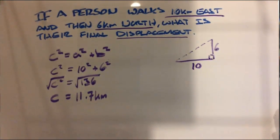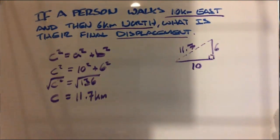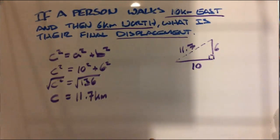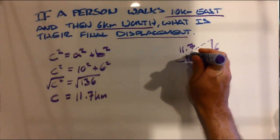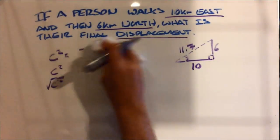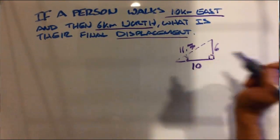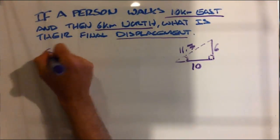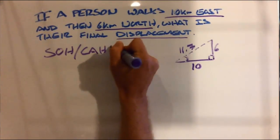That's given us our magnitude. But when we talk about displacement, we also need direction. So how can we work out direction? If this is our angle, we can utilize our formula to identify that angle. A handy hint is to use SOH CAH TOA.